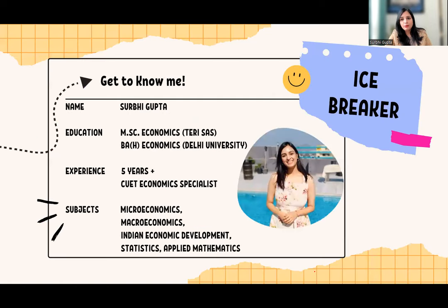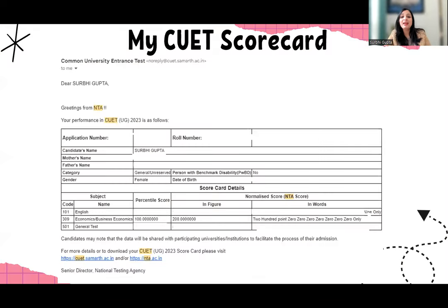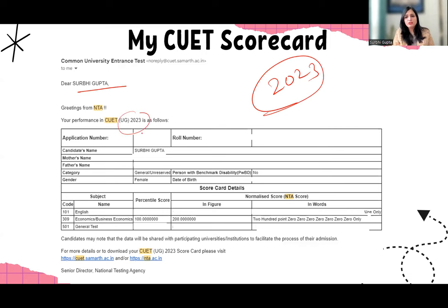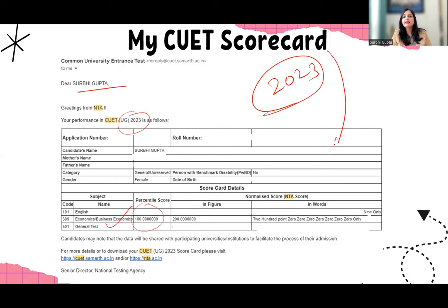If you want to know more about me, you can ask in the comment section and I'll be happy to answer. This is my 2023 scorecard — I appeared in the NTA 2023 paper just to verify as a teacher that I'm doing things correctly. You can see economics is 100th percentile in my domain. So just stick by me, trust the process, and keep track.